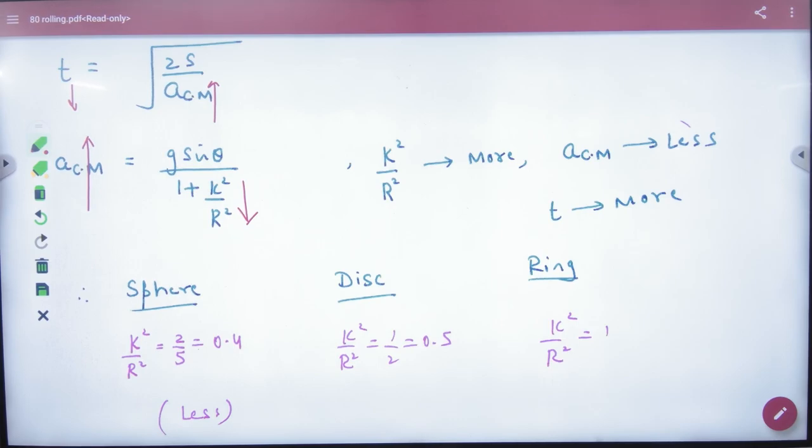So how do we check? Objective and subjective questions will come. Just take the question and k²/R² will help us to tell who is the first and the last one. So the first step is clear. Okay, next step.